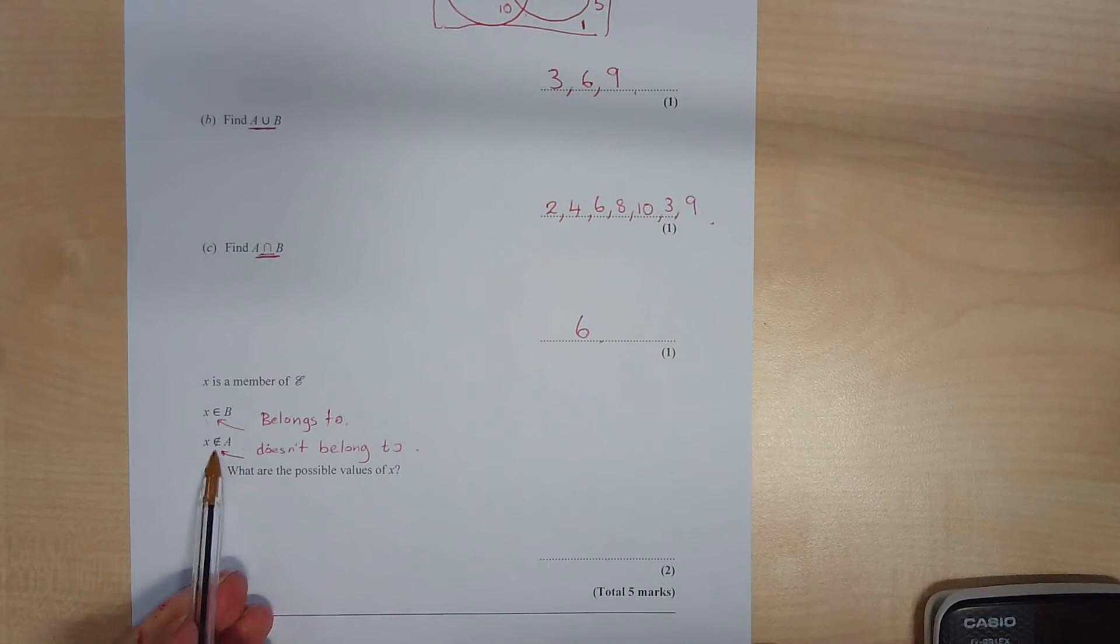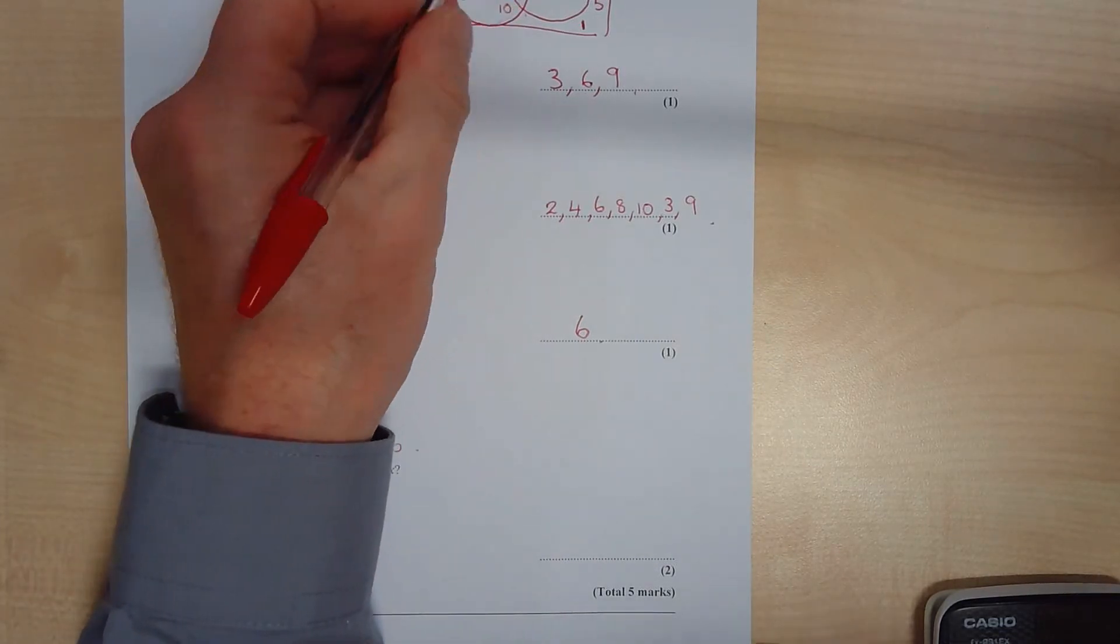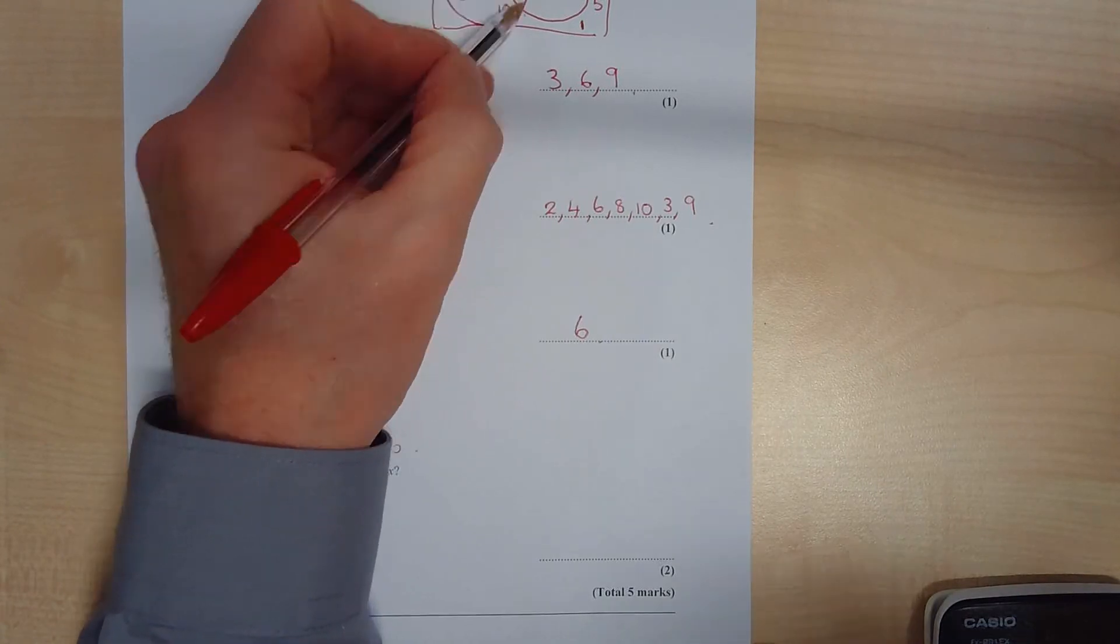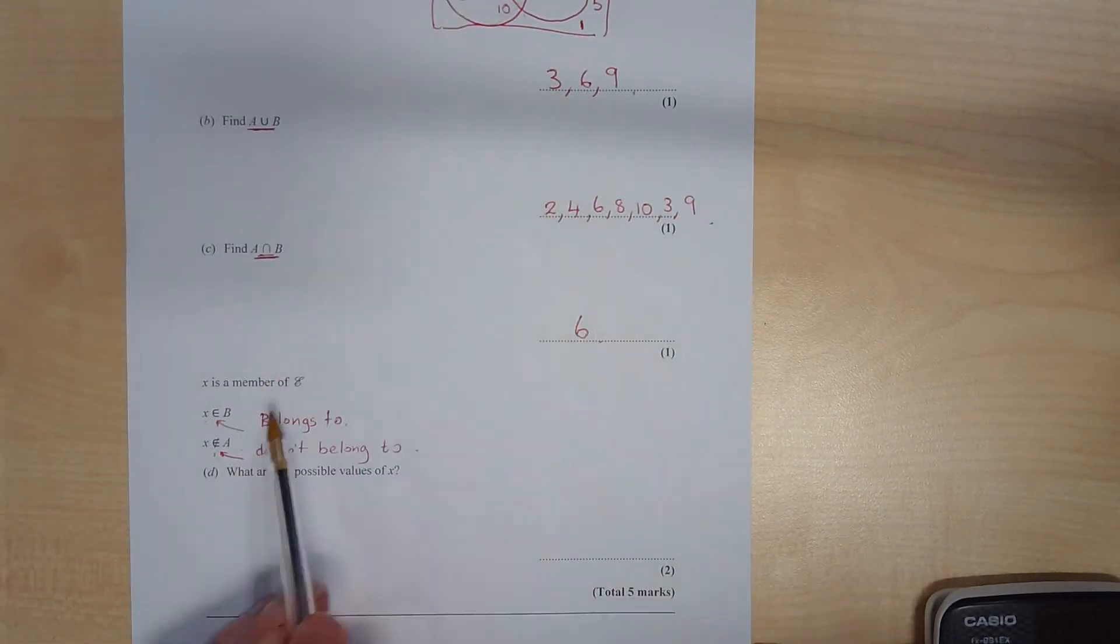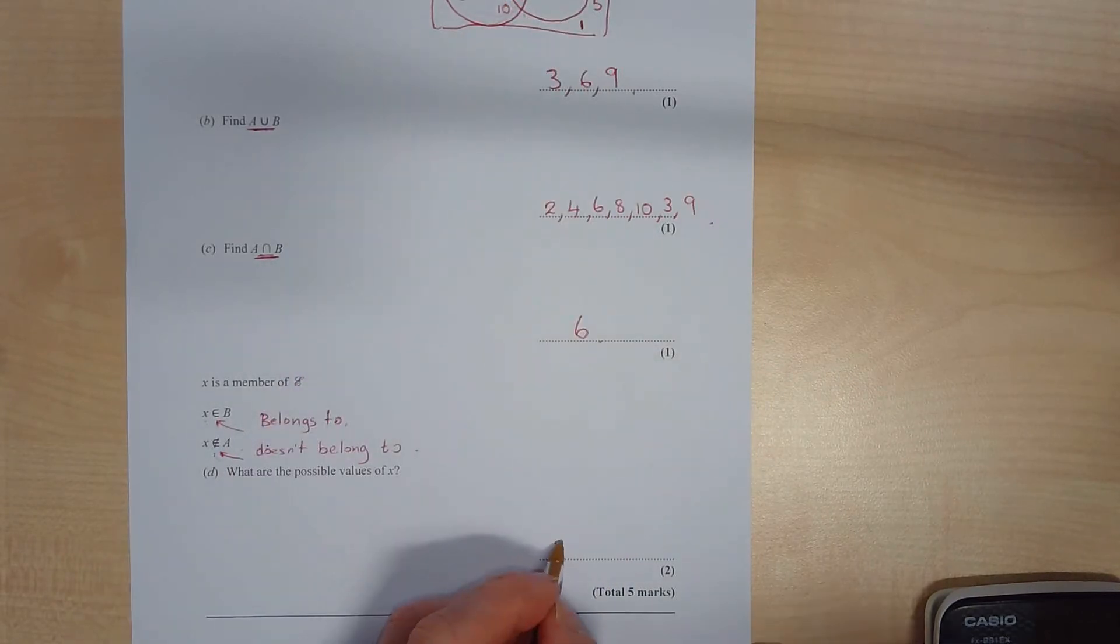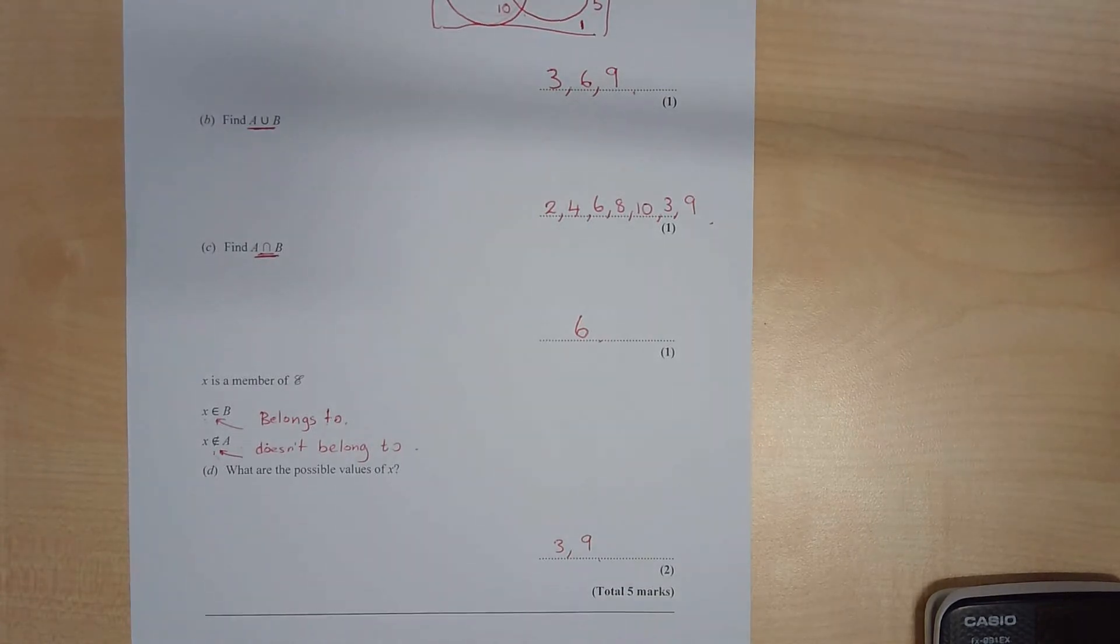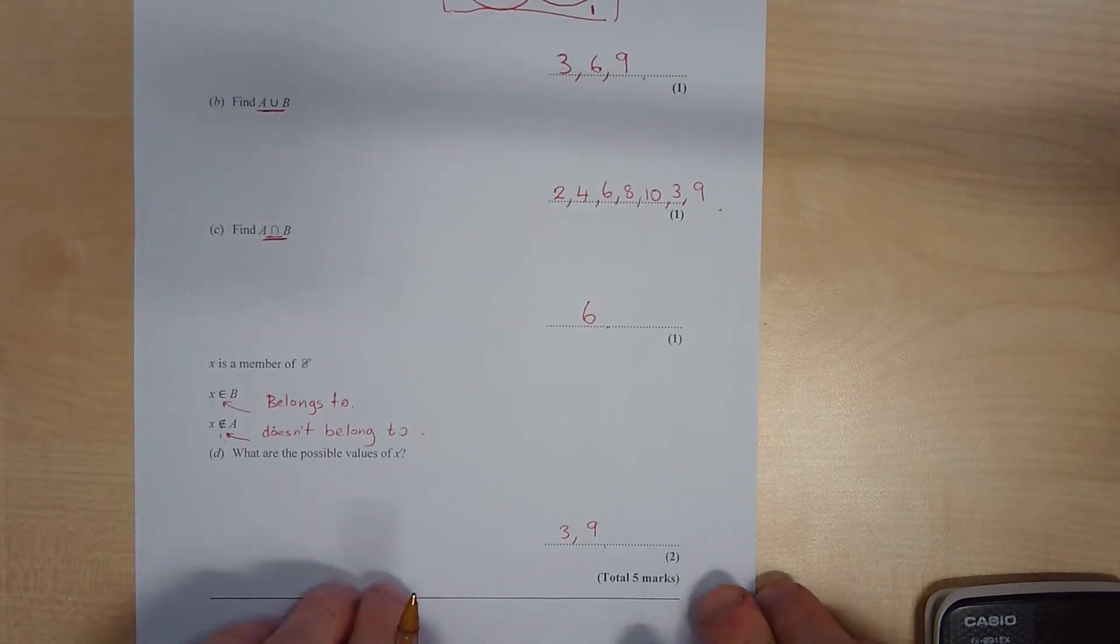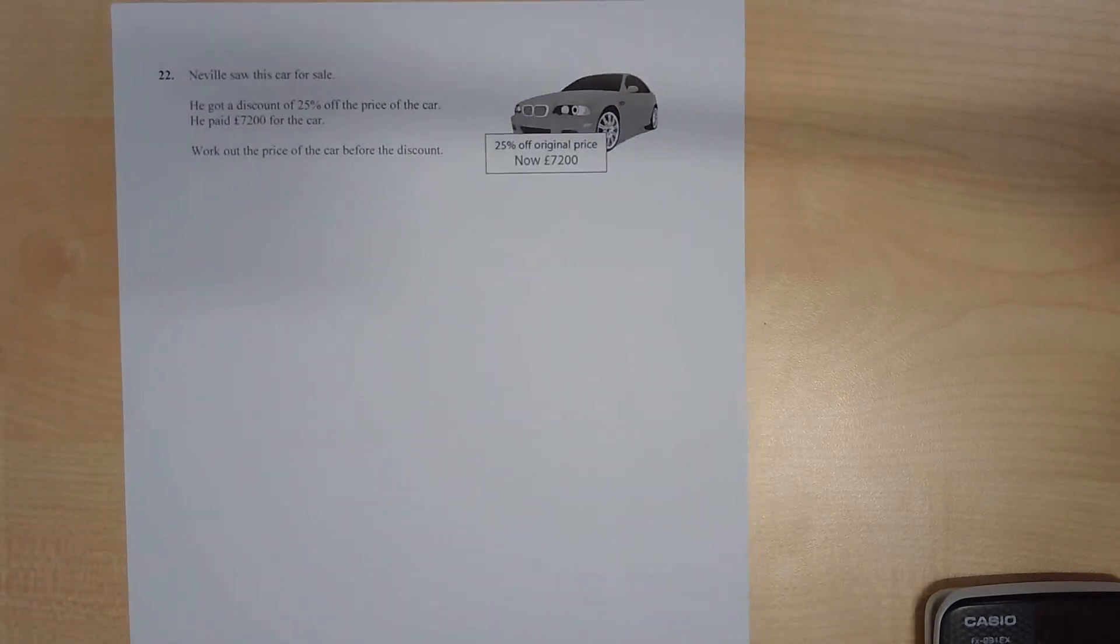Okay, so x belongs to B, so that means x must be in this circle here. It could be 3, 6, or 9. But x doesn't belong to A. Okay, so it doesn't belong, if you can see the 6, it belongs to A and B.